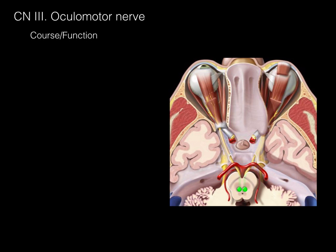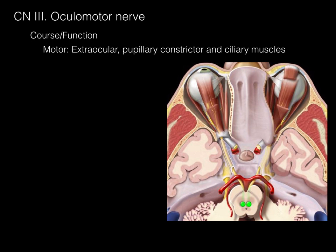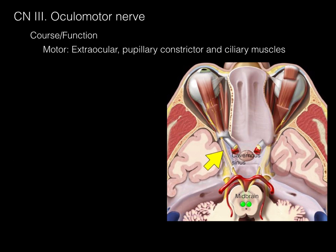Here's the course and function of the oculomotor nerve from a different view. The midbrain gives rise to cranial nerve 3, which courses through the cavernous sinus to the superior orbital fissure, and then to the extraocular muscles as well as to the pupillary constrictor and ciliary muscles.